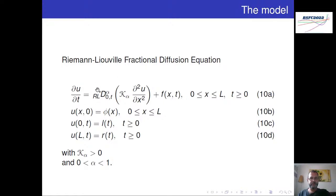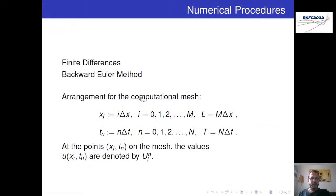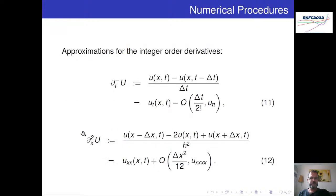Aqui nós temos o modelo no qual vamos trabalhar a equação de difusão fracionária. Coloquei como exemplo para Riemann-Liouville, mas isso será alterado para o Caputo-Fabrizio e para o Katugampola. Trabalharemos com os três operadores considerando o método tipo Euler regressivo, usando diferenças finitas. A malha computacional será feita a partir desta notação. Aqui temos as aproximações para as derivadas de ordem inteira: diferenças recuadas e diferenças centradas.